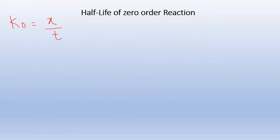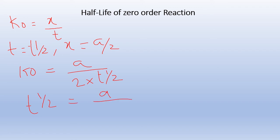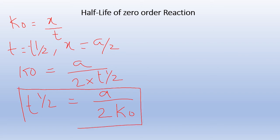Now we can calculate the half-life of a zero order reaction. We know the rate constant equation: k0 equals x/t. When t equals t½, x equals A/2. So k0 equals (A/2)/t½, which gives t½ equals A/(2k0). So the half-life of a zero order reaction is directly proportional to the initial concentration A.